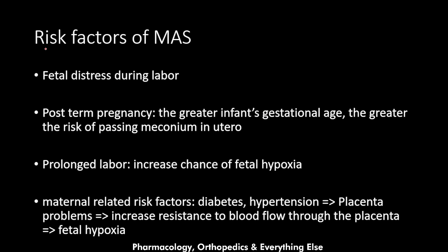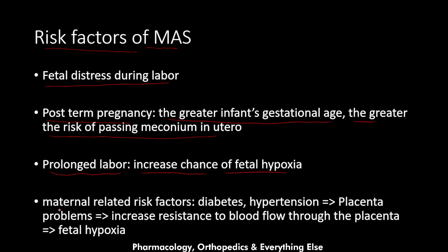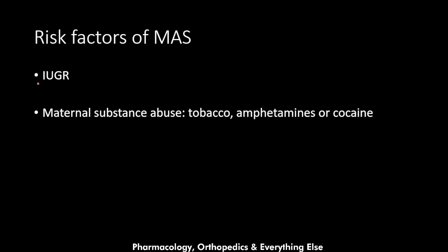Now let's talk about the risk factors. These include fetal distress during labor, post-term pregnancy (the greater the gestational age, the greater the risk), and prolonged labor because it increases the chance of fetal hypoxia. Maternal-related risk factors include diabetes and hypertension, which lead to placental problems and increased resistance to blood flow through the placenta, causing fetal hypoxia. Intrauterine growth restriction also increases risk, as does maternal substance abuse including tobacco, amphetamines, and cocaine.